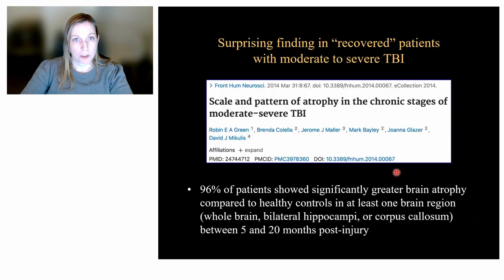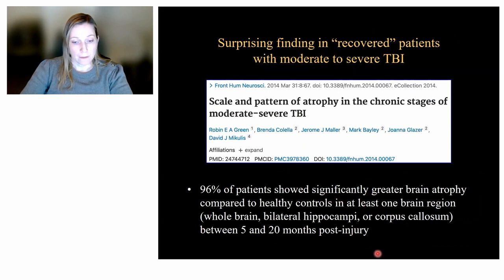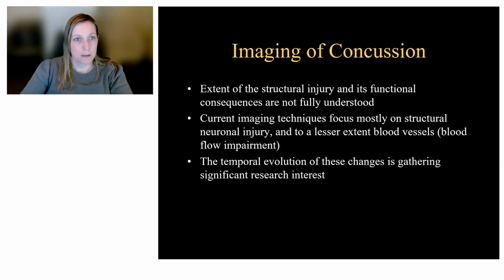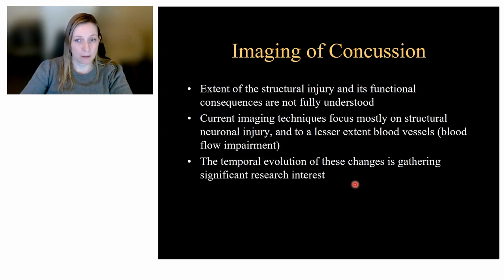Even in patients who have recovered from traumatic brain injury, we can still see sequelae down the road. A study of patients with moderate to severe traumatic brain injury showed that most patients had more atrophy in at least one brain area compared to normal controls. So even though clinically they've recovered, we can still see evidence of injury later, and there could be some underlying subclinical symptoms that are not recognized.